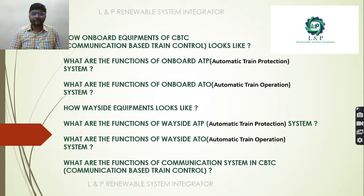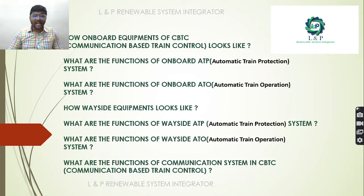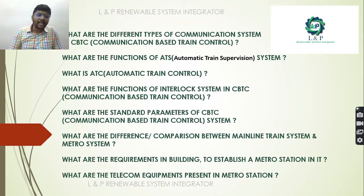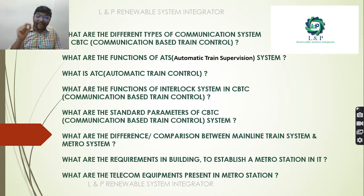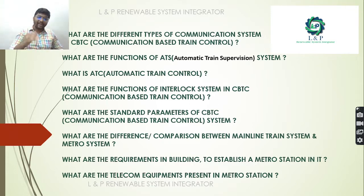In part 3 of CBTC we will cover: how on-board equipment looks and the functions of on-board ATP (automatic train protection) and on-board ATO (automatic train operation); how wayside equipment looks and the functions of wayside ATP and ATO; communication systems in CBTC technology; different types of communication systems; functions of ATS; what ATC is; interlocking systems; standard parameters of CBTC; a comparison between mainline and metro train systems; and building and telecom requirements for a metro station.